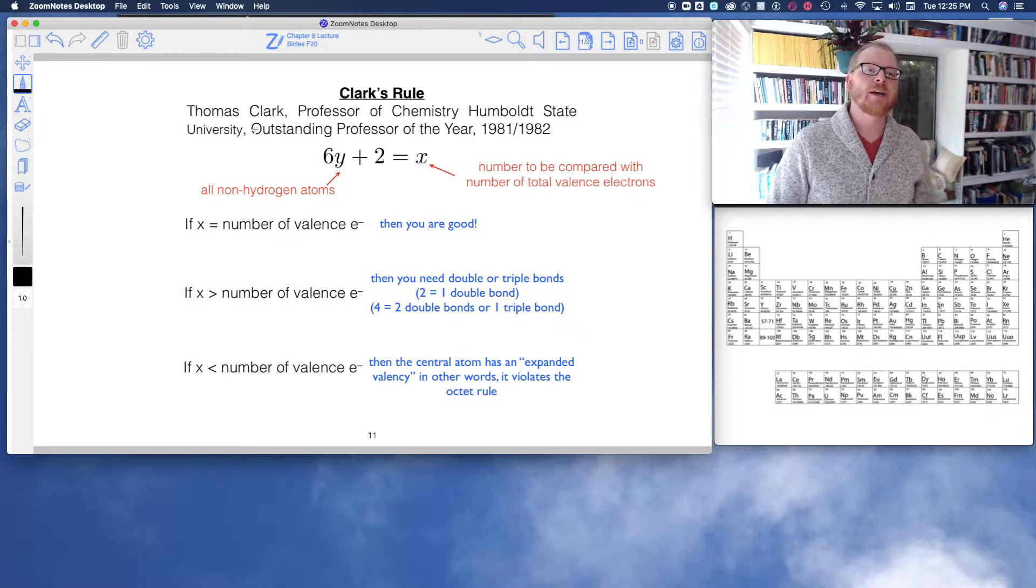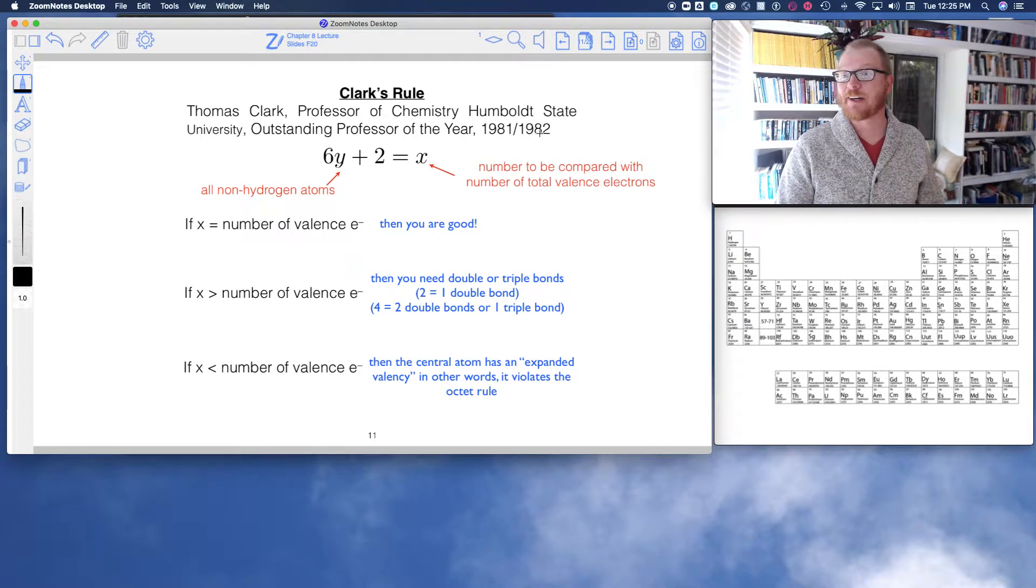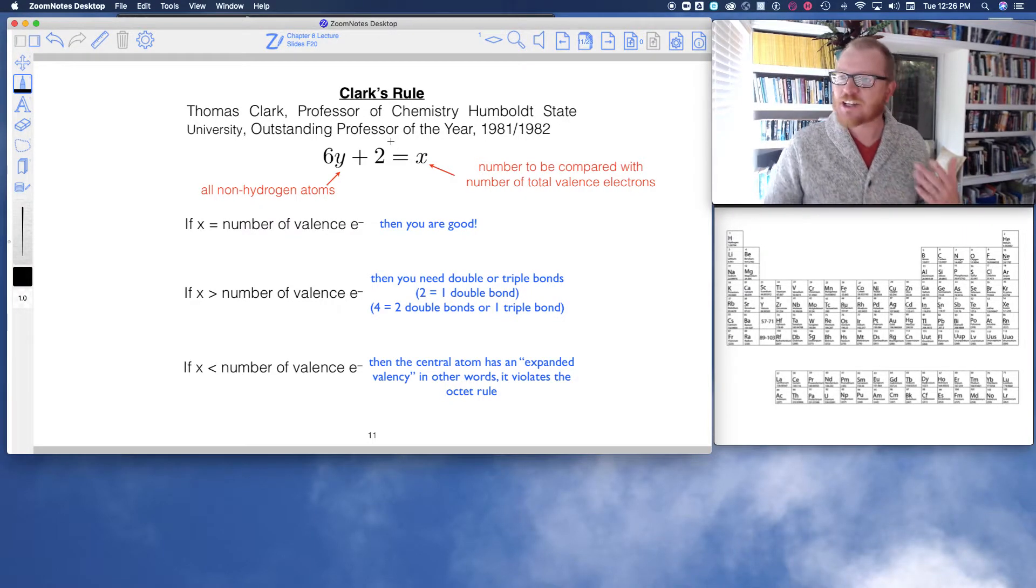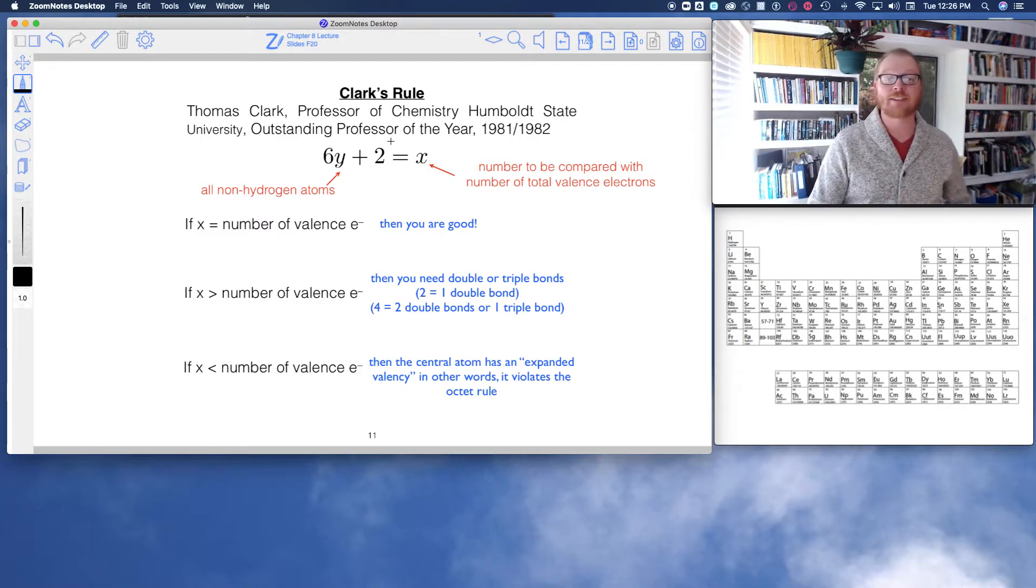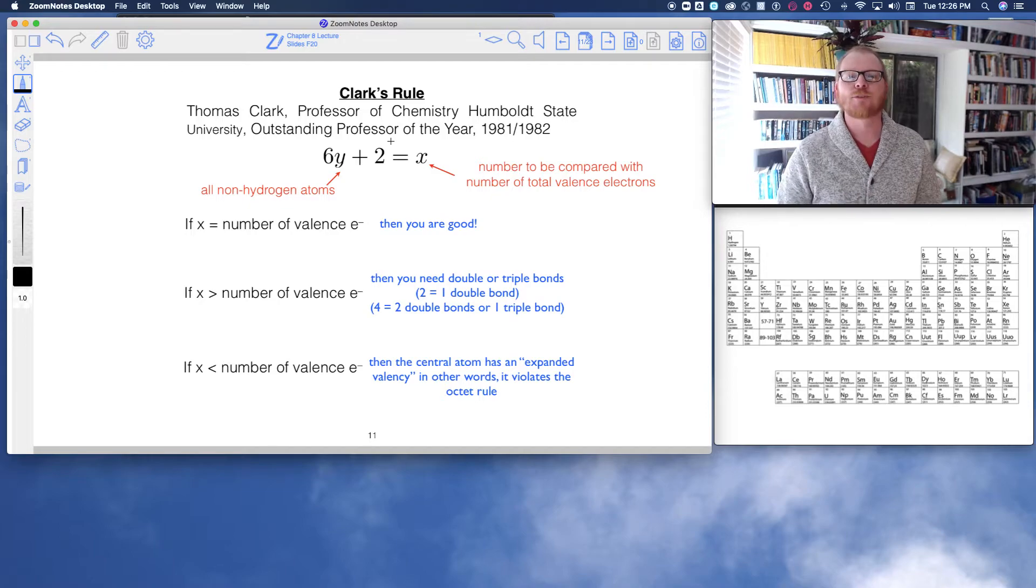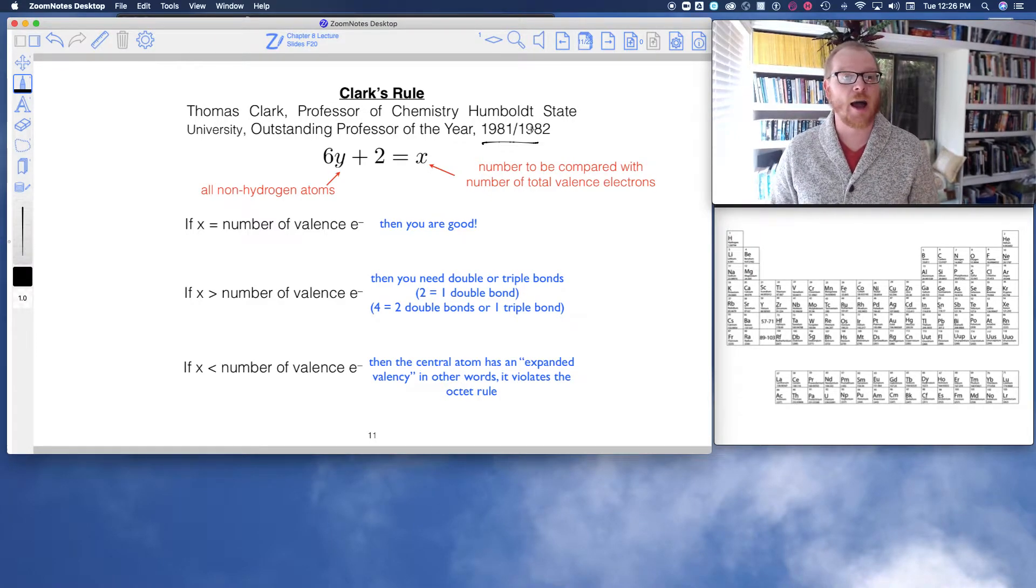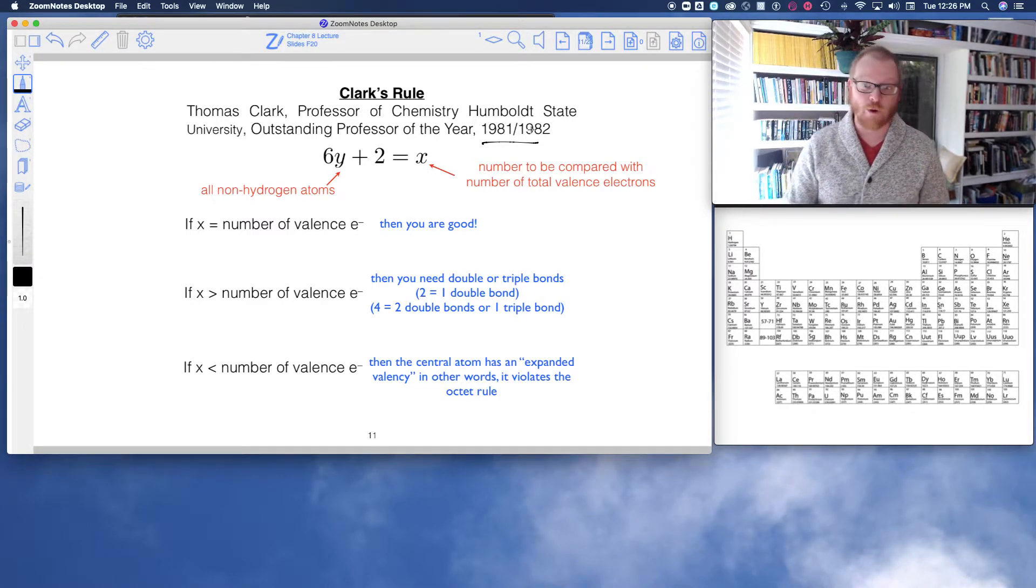Tom Clark, this is a cool story. Tom Clark was a professor of chemistry at HSU. He won the Outstanding Professor of the Year in 1981 and 1982, so a long time ago. And this rule is not just like an HSU thing. This is a really famous rule that's widely published throughout chemistry texts. It just so happens to not be in our textbook. It's an older rule, but I still think it works great. So that's why I'm kind of diverting from the book a little bit and giving some credence to Professor Clark for his rule.